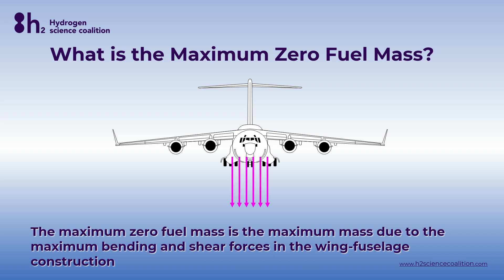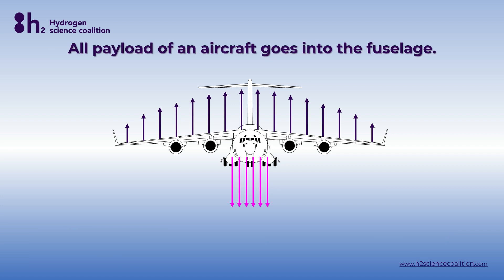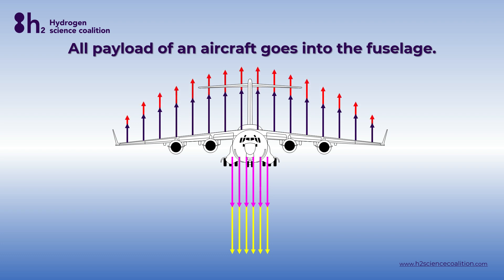When we load an aircraft with payload, like cargo and passengers, they will be seated or stored in the fuselage of the aircraft. This will lead to a higher weight of the fuselage, represented by the magenta arrows. This payload in the fuselage will have to be lifted by the wing, represented by the blue arrows on top of the wing. The distribution of the lift along the wingspan is more or less elliptical. This will lead to a certain bending of the wing, and the magnitude of this bending moment is the highest at the wing-fuselage construction. If you put more and more mass in the fuselage, represented by the yellow arrows, the wing has to produce more and more lift, and this will result in an increase of the bending forces in the wing-fuselage construction.